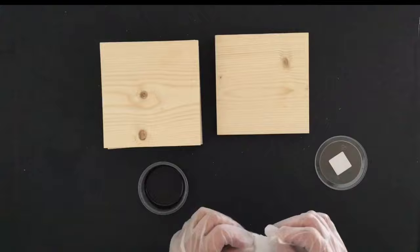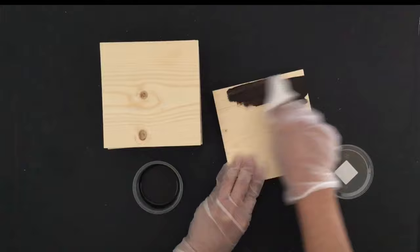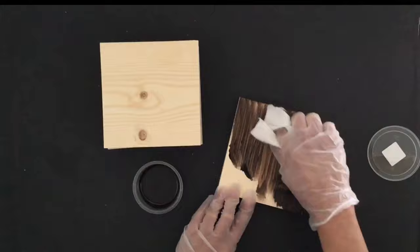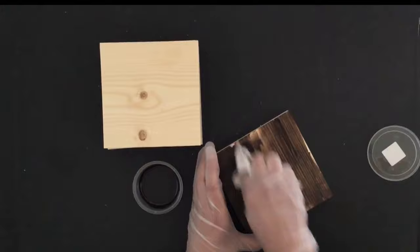The first step is to stain the wood tiles. Make sure you put your gloves on, take the cloth and dip it into the stain, and then go ahead and start applying the stain to the wood. It's key to go in the same direction as the wood grain.